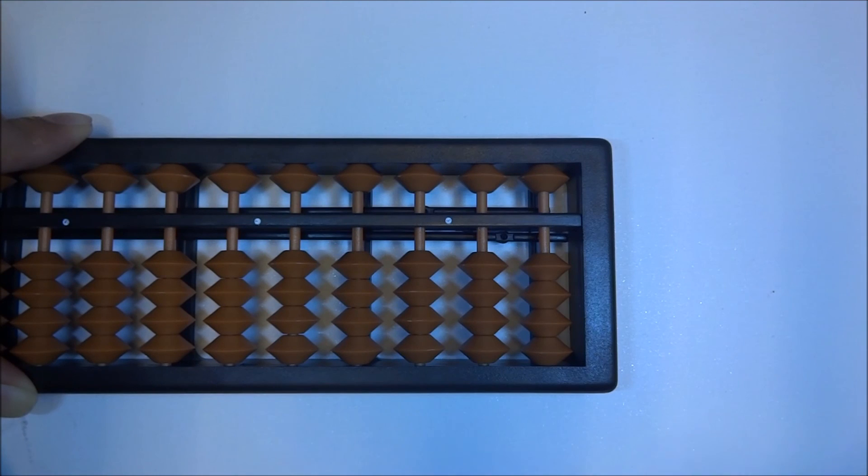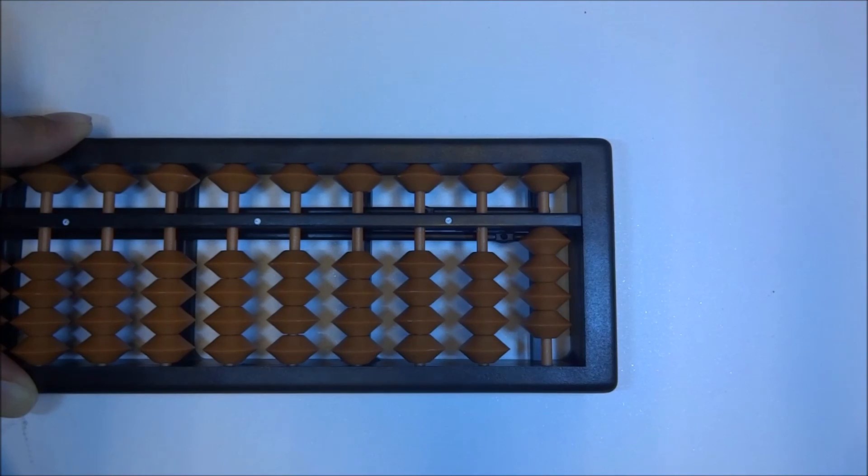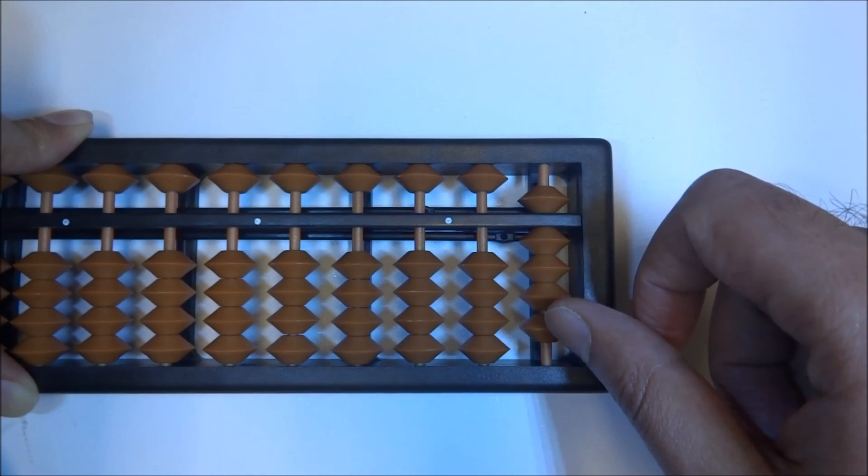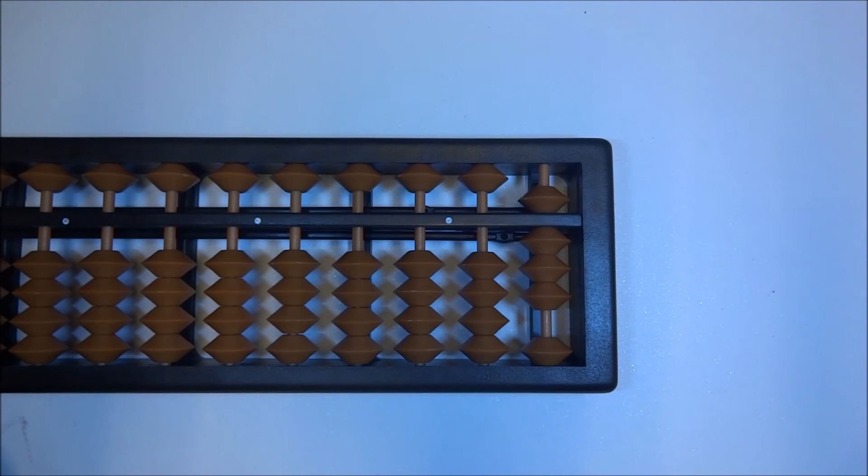So let's try one more. Let's do 4 plus 4. So up 4. Plus 4. Well, same situation. We don't have enough beads. So what are we going to do? We're going to apply the little friend of 4, which is 1. So up 5 and down 1. 4 plus 4, and we get 8.